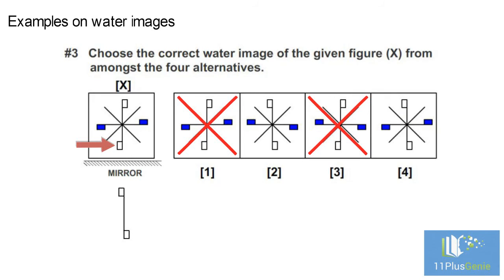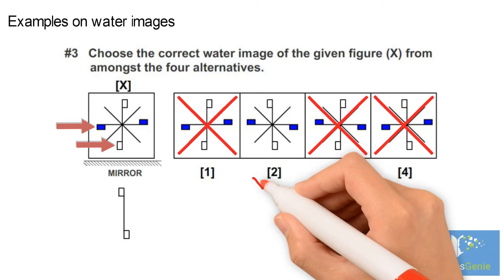This rectangle on the left is below the line. In the water image it must be above the line. The correct answer is diagram 2.